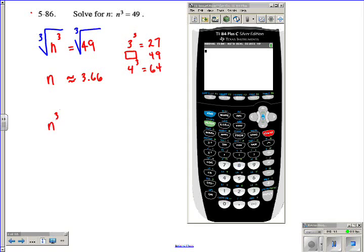n to the third equals 49, and we want to break it into a system of equations, we could look at this side, and then look at this side separately here as its own function.